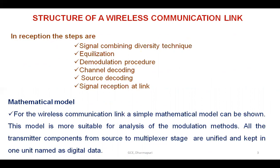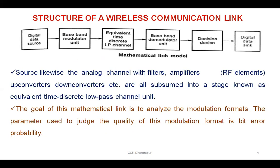The next topic is the wireless mathematical model of a wireless communication link. A simple mathematical model is shown in a figure; this model is more suitable for analysis of modulation methods. All the transmitter components from source to multiplexer chain are unified and kept in one unit named as the digital data. This is the mathematical link model.